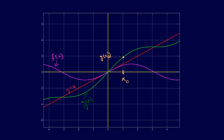Evaluating the function at x₀ gives us g(x₀). Using g(x₀) as x₁ means we travel over to the y = x line and use that value as x₁. Then we go up, evaluate g(x) at x₁, and that gives us g(x₁). We use that value over here as x₂.